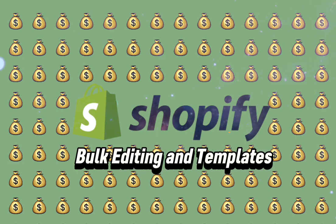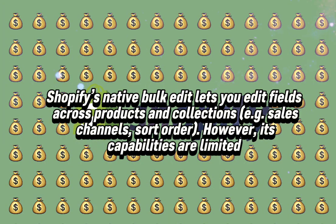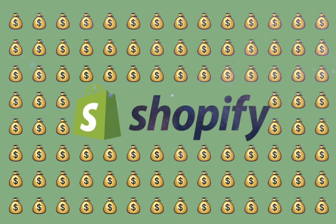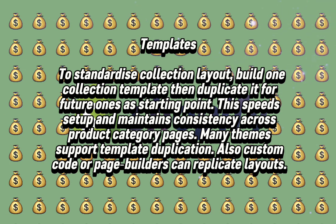Bulk Editing and Templates. Shopify's native bulk edit lets you edit fields across products and collections, such as sales channels and sort order; however, its capabilities are limited. Apps like AbleStar Bulk Product Editor allow advanced filtering and batch assignment to collections — you can add or remove products from manual collections, trigger changes via spreadsheets, schedule updates, and preview edits. To standardize collection layout, build one collection template then duplicate it for future ones as a starting point, speeding up setup and maintaining consistency. Many themes support template duplication; custom code or page builders can also replicate layouts.